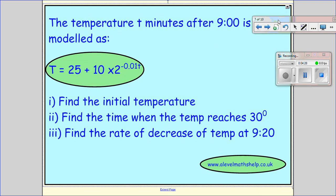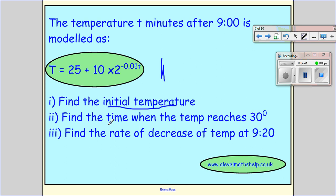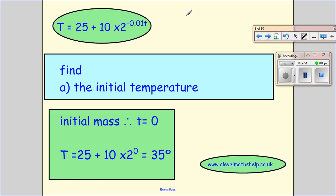So in this question, we have the temperature. It should be temperature given by big T. T minutes after 9 o'clock is modeled as this thing here. We want to find the initial temperature. We want to find the time when the temperature reaches 30. And we want to find the rate of decrease of temperature at 9:20. So we have this and we want to find the initial temperature. So the initial temperature is when T equals 0. So the amount of time passed is 0. So we put 0 in there. Anything to the power of 0 is 1. So 25 plus 10 is going to give you that the temperature is 35 degrees.